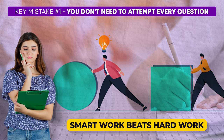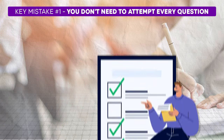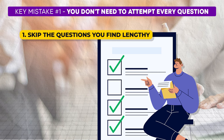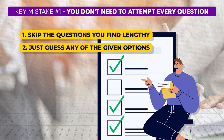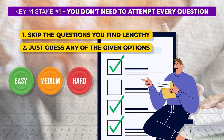If you choose any data interpretation question, you will see many of the questions can be solved easily with simple calculations. Only 1 or 2 questions require a lengthy amount of calculation. You should skip the questions you find lengthy and time consuming or just guess any of the given options. If 2 options of this segment take 10 minutes to solve, then you might miss out on 10 to 12 easy questions and you won't be able to finish the paper in the given time.